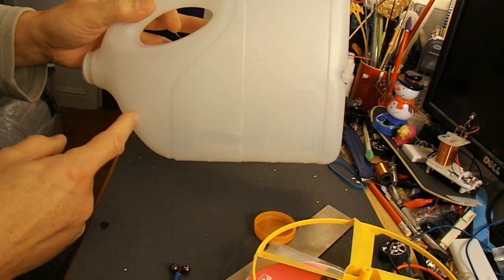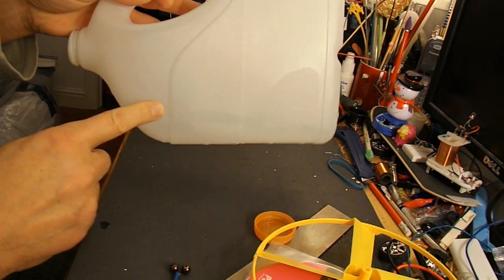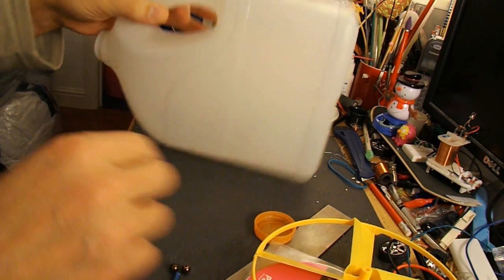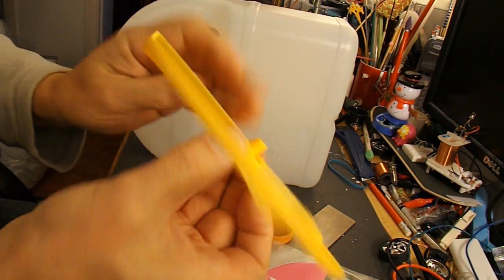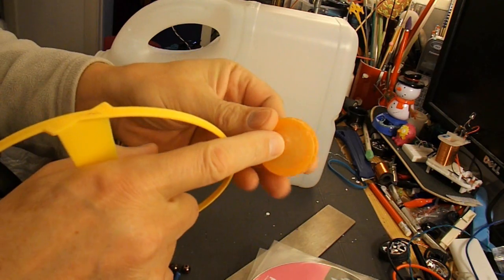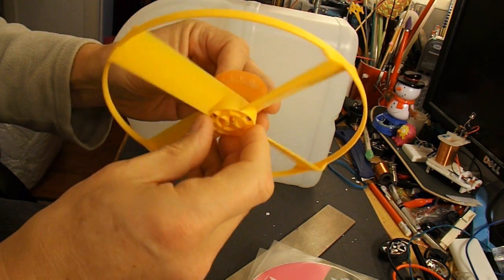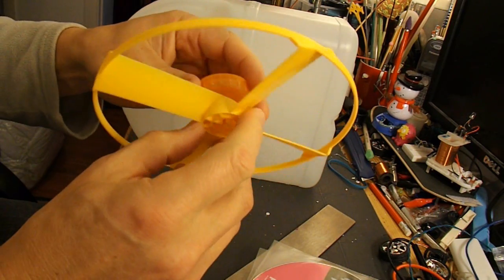We'll keep this very simple. I'll just melt some holes through for the barbecue skewer axles to go through. I'll use the fan blade, I'll melt a hole in the middle of the bottle top, so that the fan blade, or the shaft from the fan, can go through there.